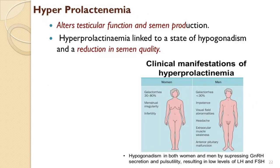Excessive prolactin levels are a reason for infertility in both males and females. In males, hyperprolactinemia leads to low testosterone, decreased production of spermatozoa, and decreased sperm motility. In females, it leads to low FSH and LH, resulting in irregular cycles and anovulation. Thus, hyperprolactinemia is a major reason for infertility in both female and male patients.